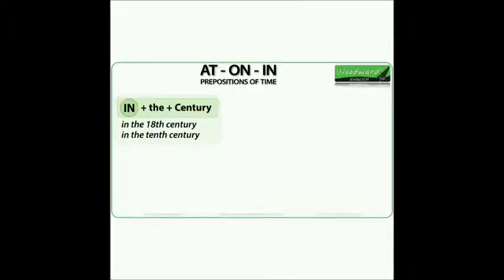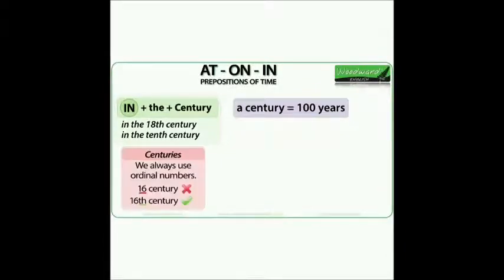The preposition 'in' is also used with centuries. A century is 100 years. We say: in the 18th century, in the 10th century. We use ordinal numbers when referring to centuries. We say '16th century', not '16th century' — and notice how we use the article 'the' before the number.